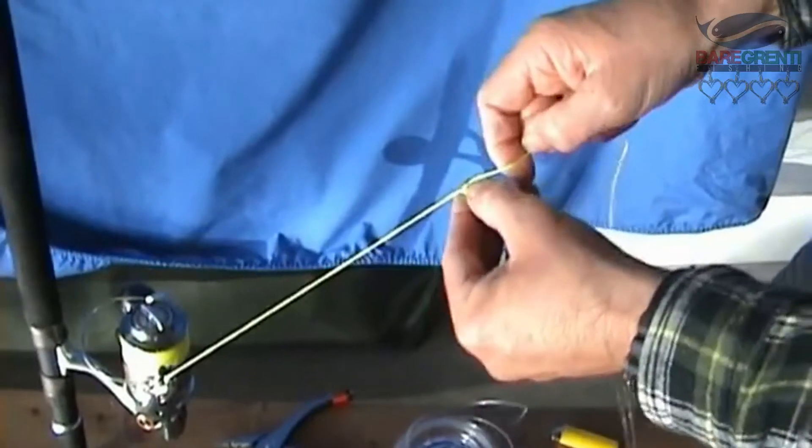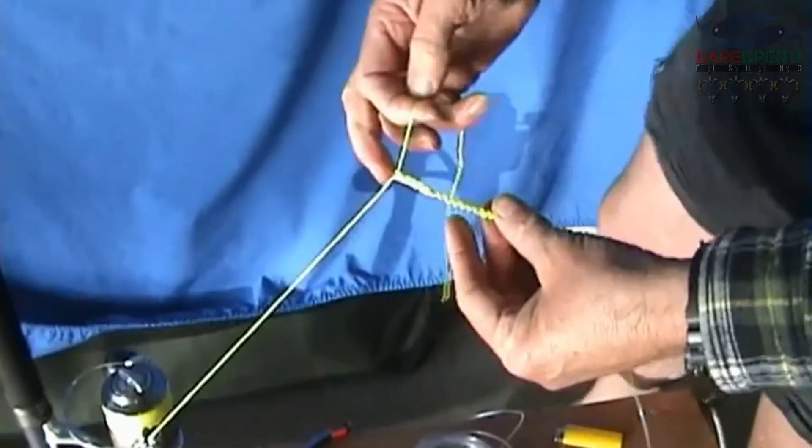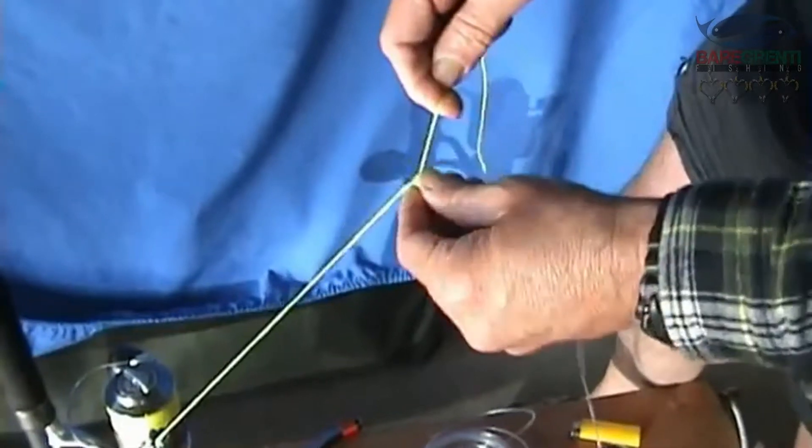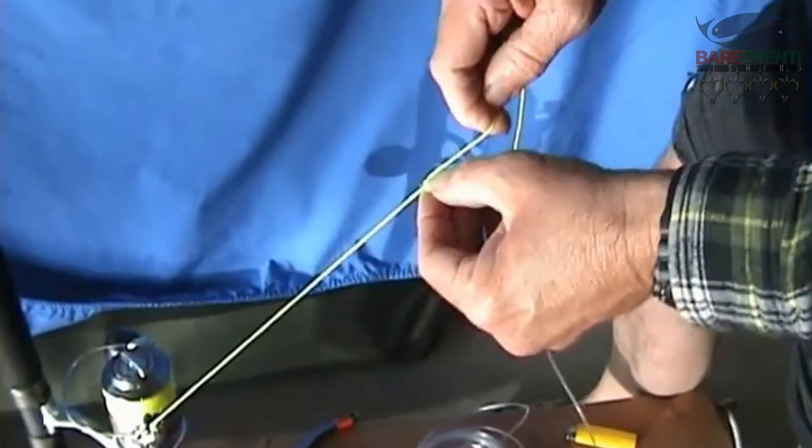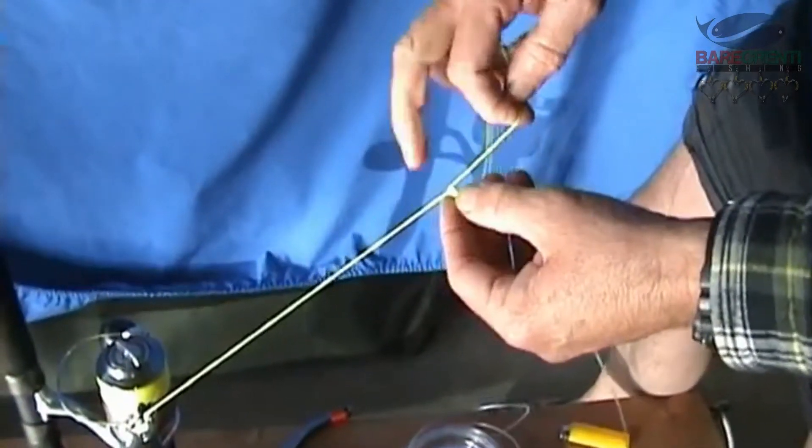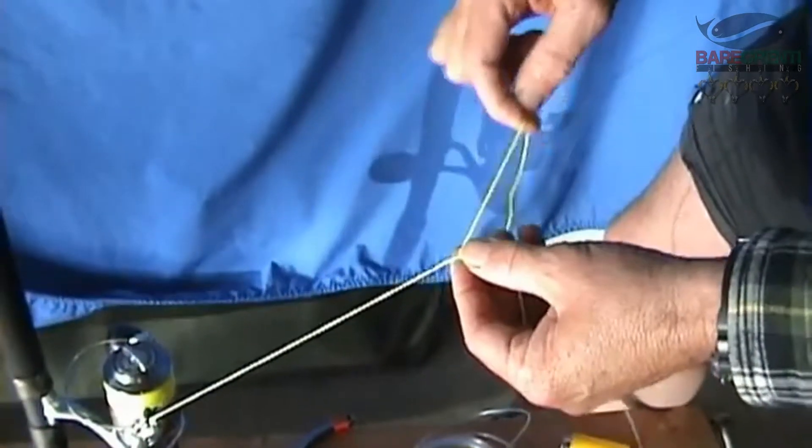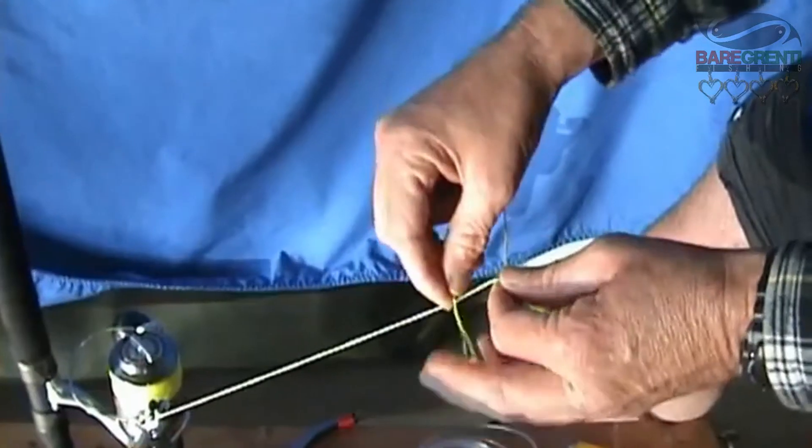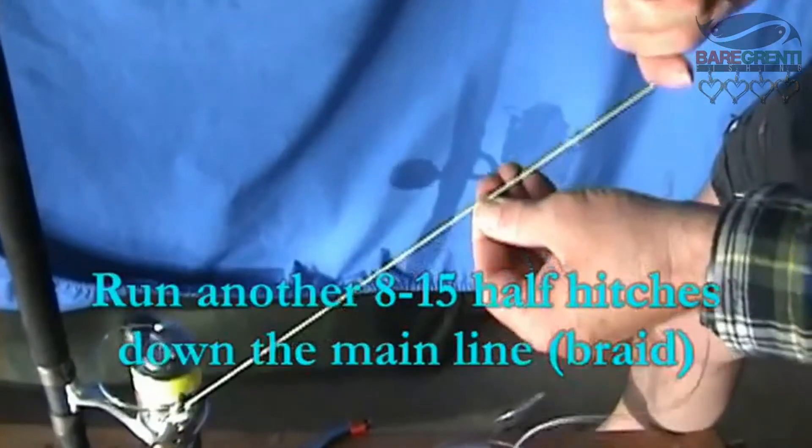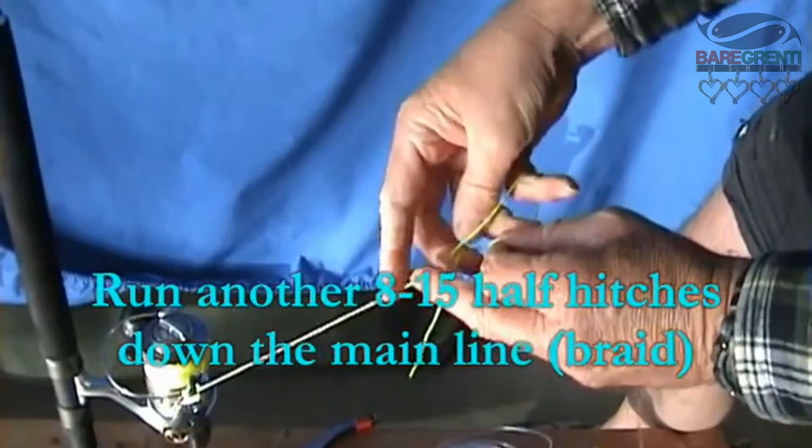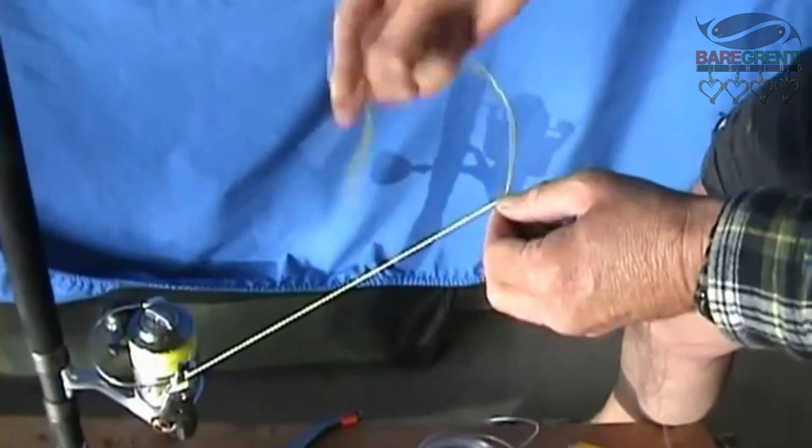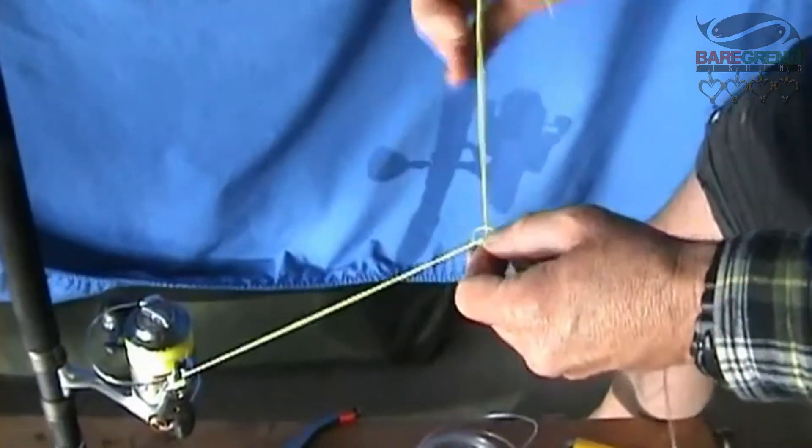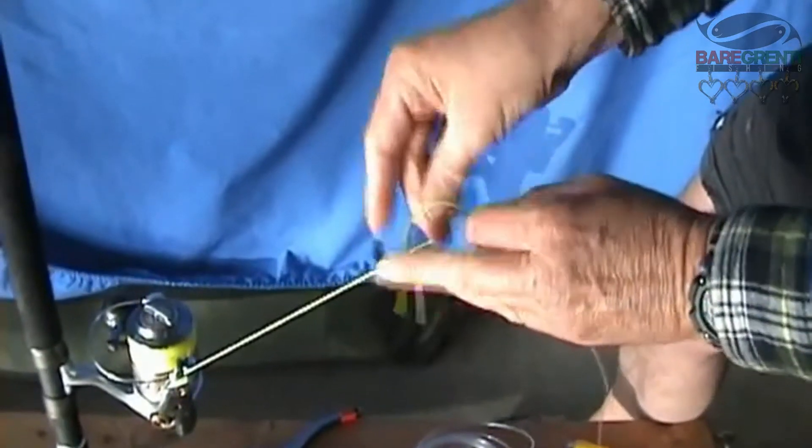So now we'll just do a few more of those opposing half hitches till we get to the end there. All right so that's locked up reasonably tight up to the end of the trace. Now we're going to do a few more half hitches, 7 or 8 or 9 or 10 of them along the braided line and that's going to help protect the braided line. These are all opposing each other, one's under one's over.